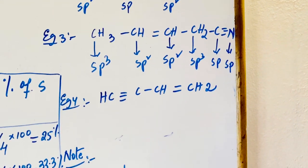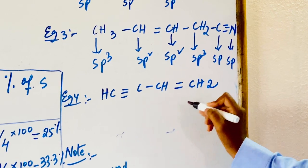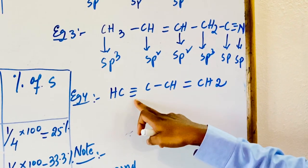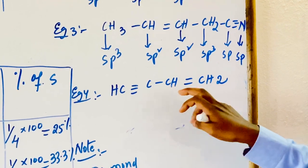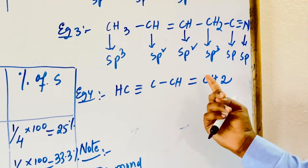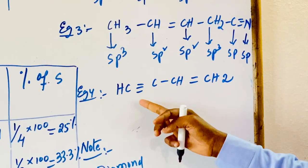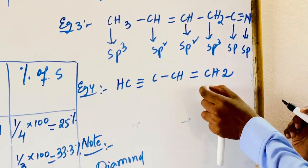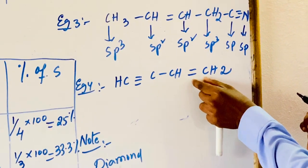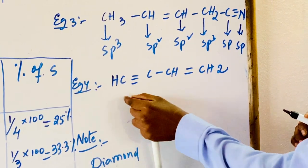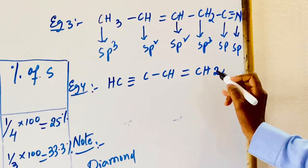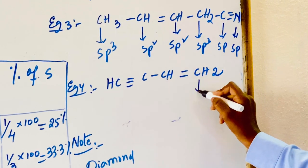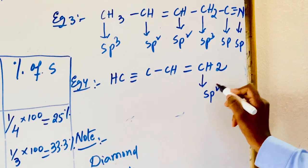In the last example, the structure has one double bond and one triple bond. Based on priority order, the double bond has more priority compared to the triple bond, so numbering is given from the right side and the annotation is sp2.